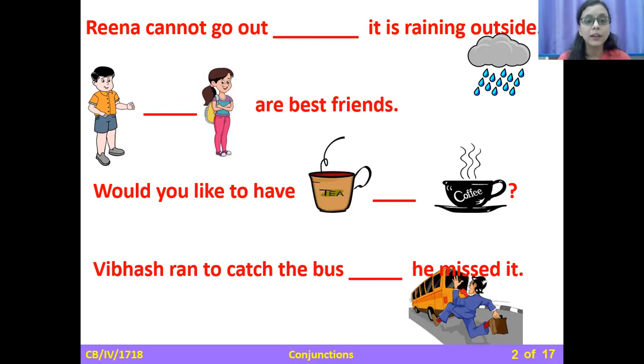Vibhas ran to catch the bus, but he missed it. When Vibhas ran to catch the bus, he should get the bus, right? But you see what happened? He missed it. So what word we will use here? Vibhas ran to catch the bus, but he missed it. So it is telling something opposite. It is giving an opposite idea. What should happen? He should have got the bus. But the opposite idea happened. So but is used.